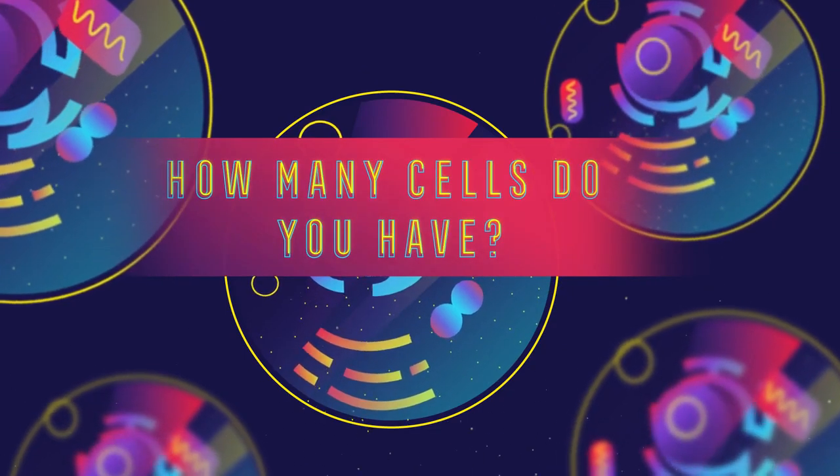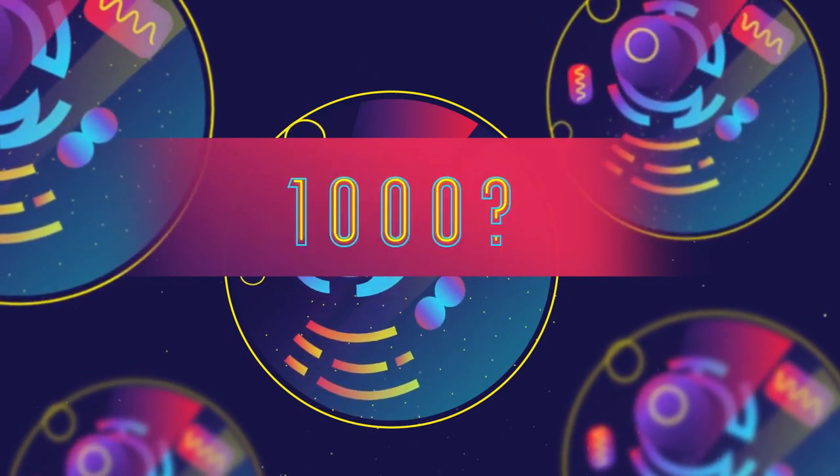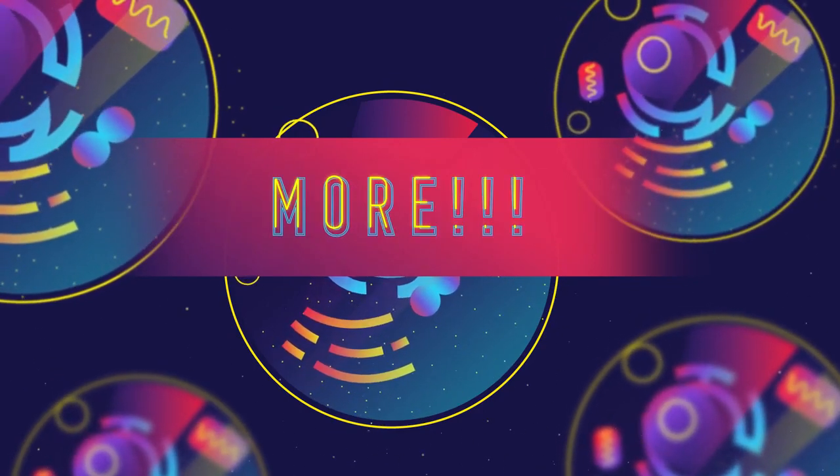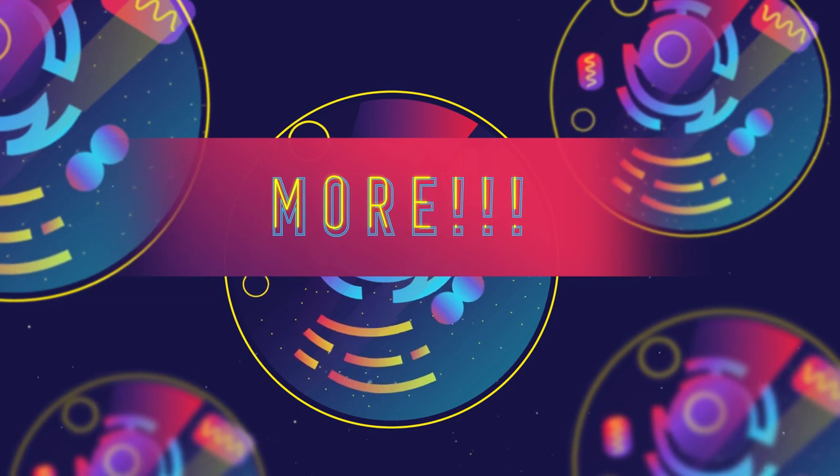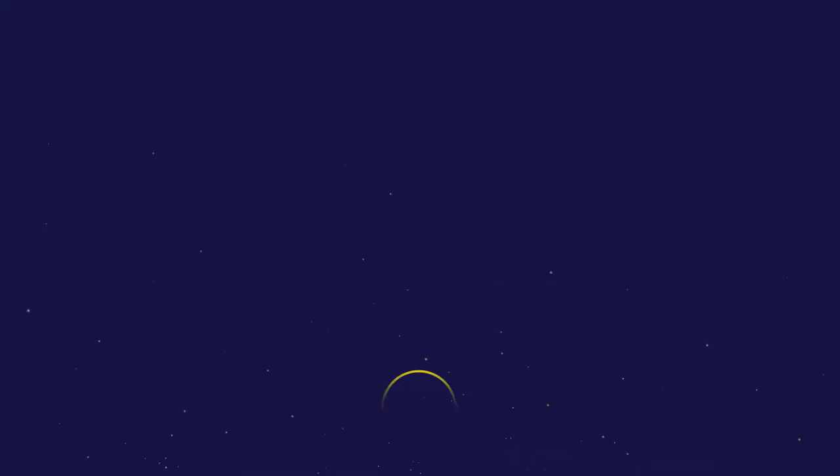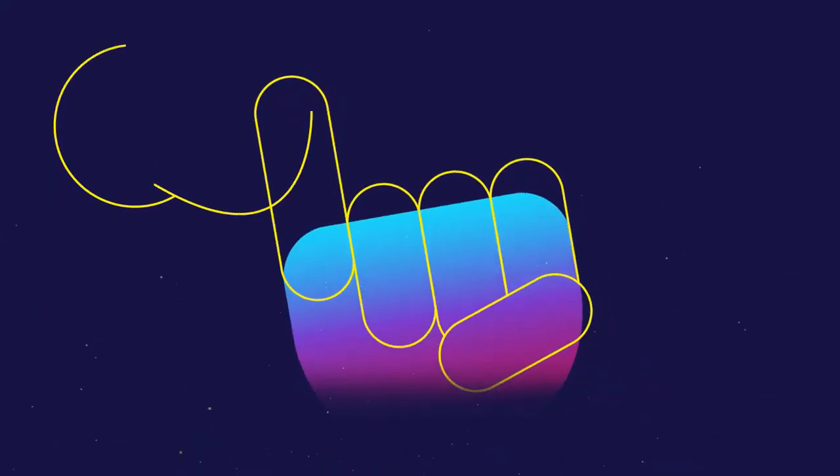So how many cells do you think you have in your body? A thousand? A million? A million million? More? We contain around 50 trillion cells. Have a look at your little finger. There's probably about 10 billion cells in that.